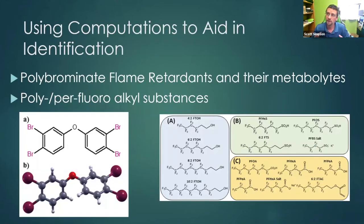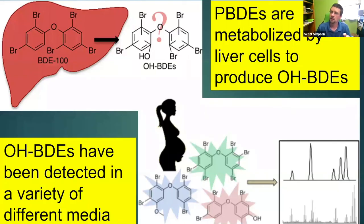The other one has to deal with aiding in the identification of bioaccumulative, toxic and persistent compounds. Sometimes we don't actually know what these compounds are. So two main examples that I have are polybrominated or polychlorinated flame retardants, and another big one that's been coming up in the news a lot lately are PFOS or perfluoroalkyl substances.